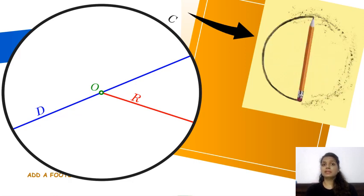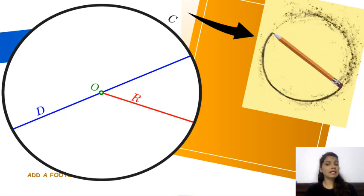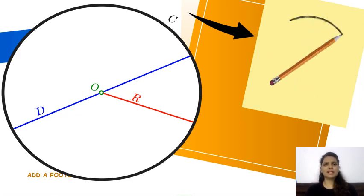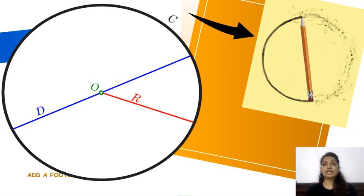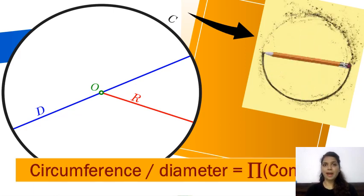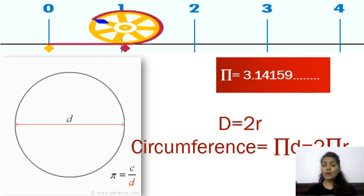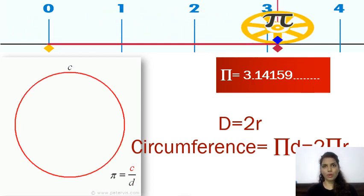Whenever we divide the circumference by the diameter, we always get a constant and this constant is called pi. We also know that the value of pi is 3.14 and the formula for the circumference of a circle is 2πr.